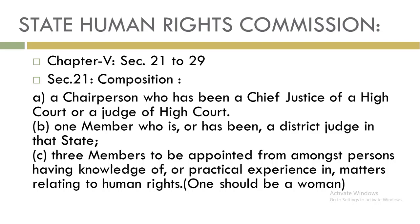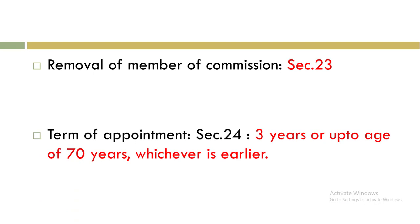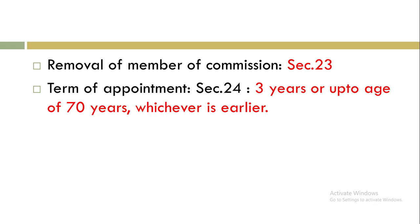The removal of members of the State Human Rights Commission is described under Section 23. The term of appointment is in Section 24, and it is the same as for the NHRC: three years or up to the age of 70 years, whichever is earlier.